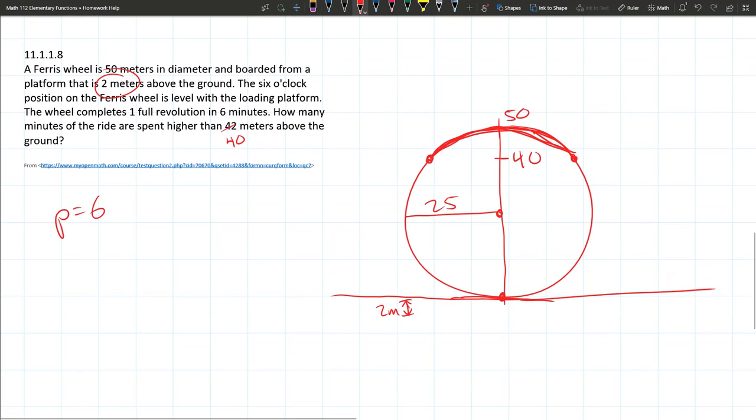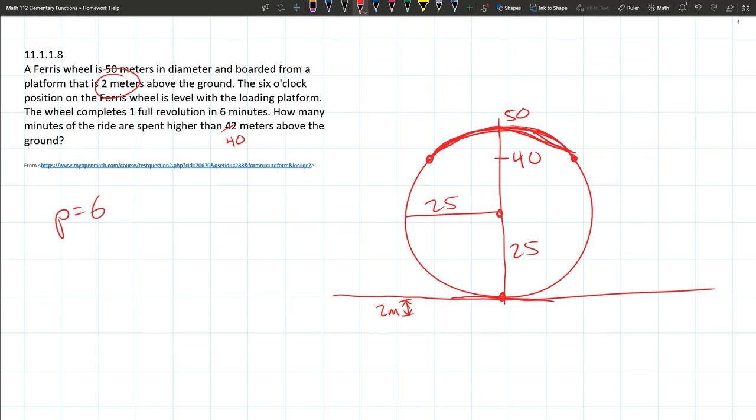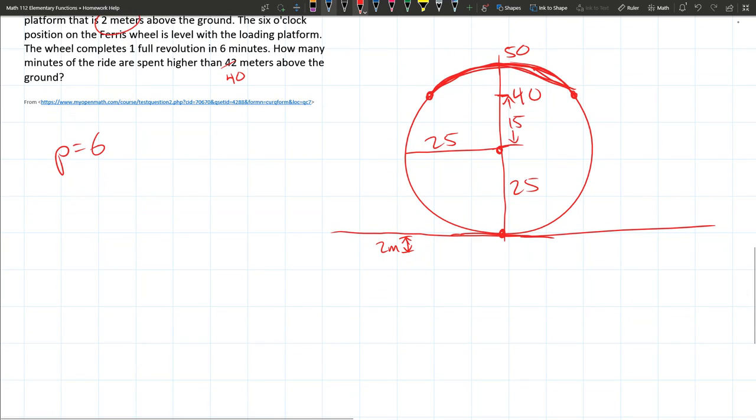Okay, so this distance is 25 from the bottom to the middle, so from the middle to the 40 is going to be another 15 right there. So that's going to be 15. Let's redraw this. I don't really like red pens anyway.